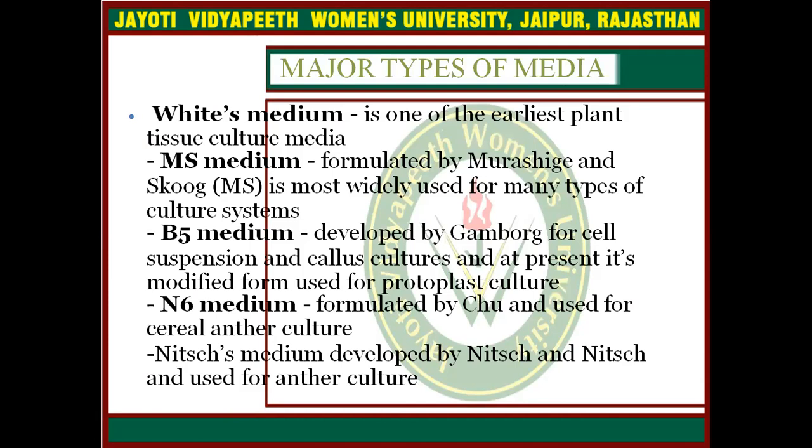Now we will discuss the major types of media. White media is one of the earliest plant tissue culture media. MS media, formulated by Murashige and Skoog, is most widely used for many types of culture systems. B5 media was developed by Gamborg for cell suspension culture and callus culture, and its modified form is used for protoplast culture. B6 media, formulated by Chu, is used for cereal anther culture.